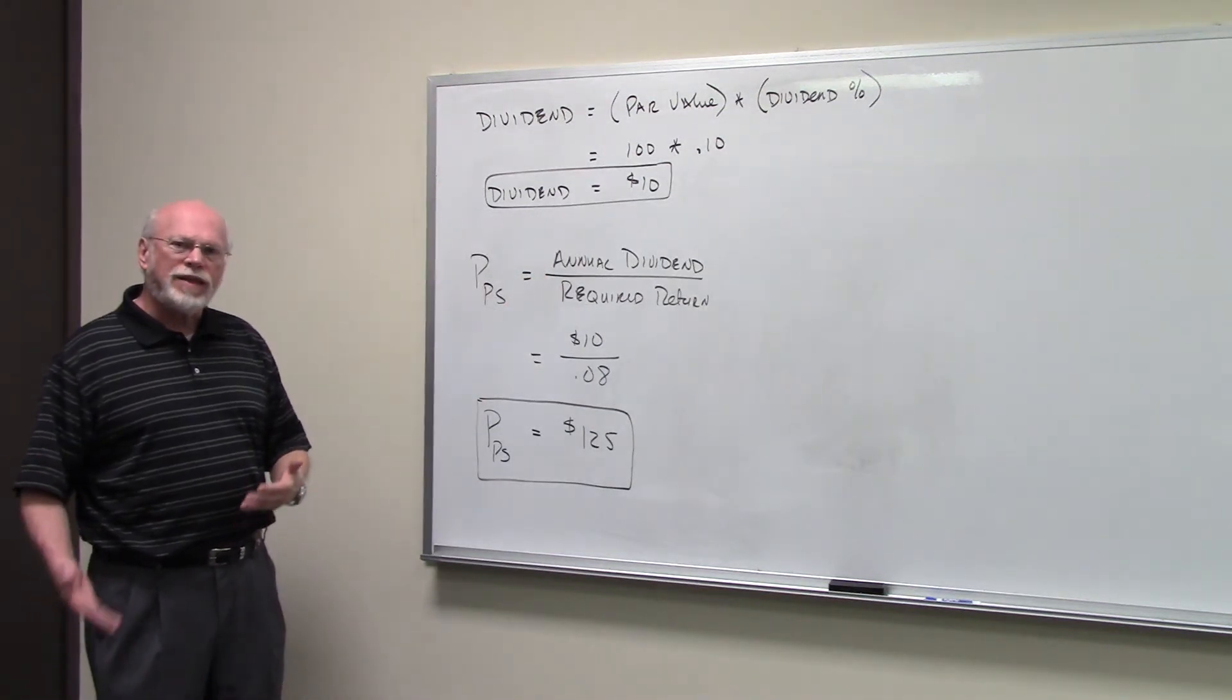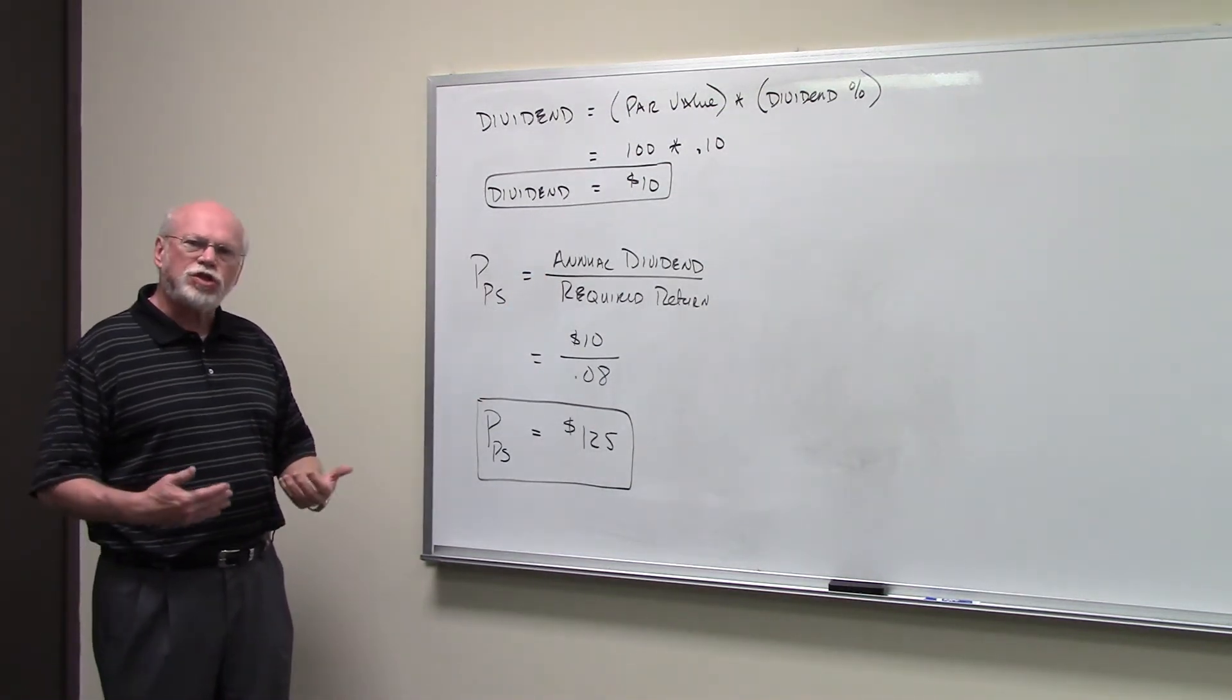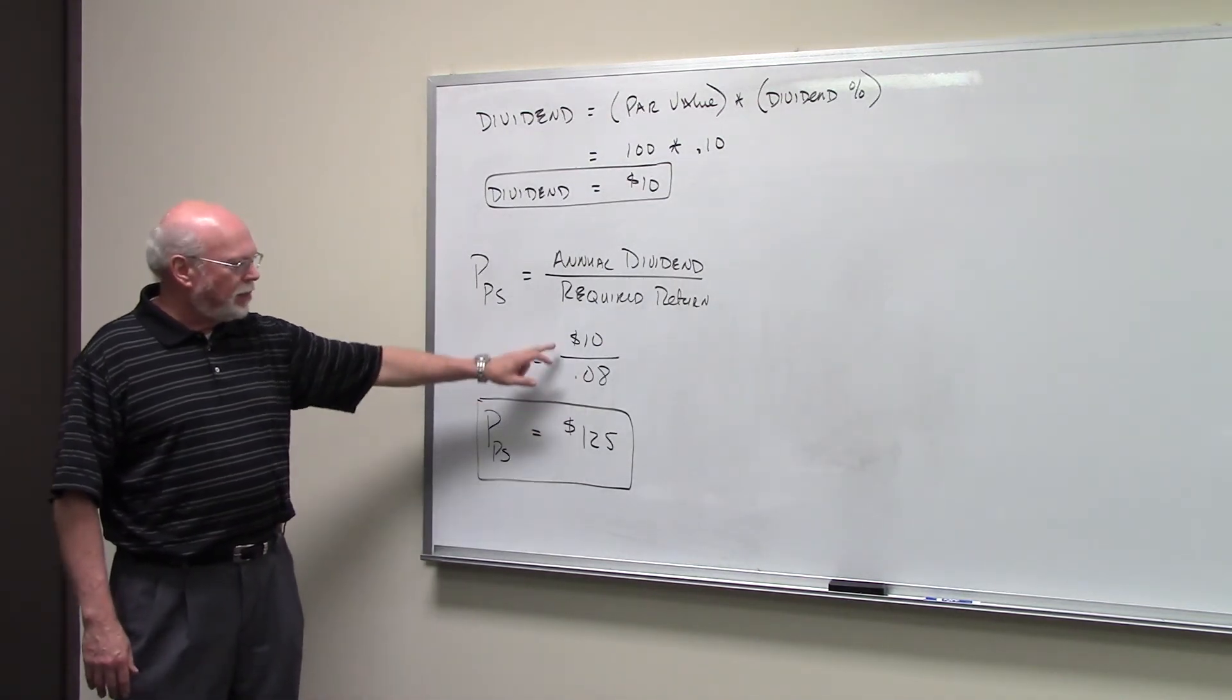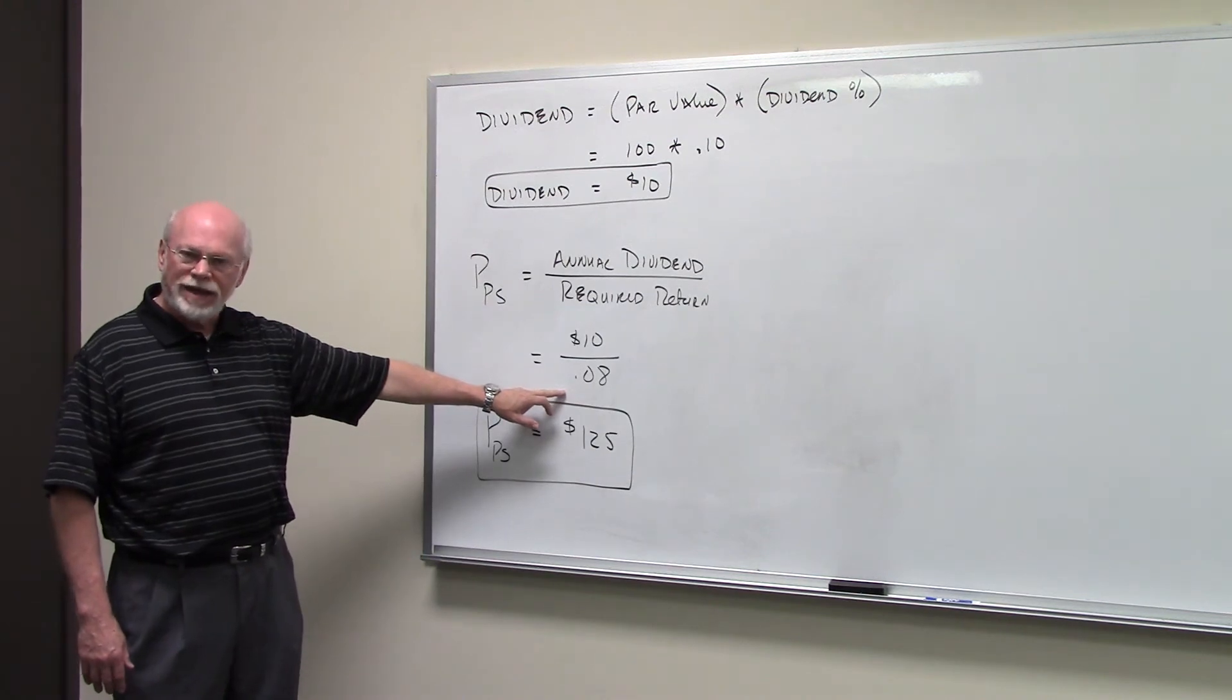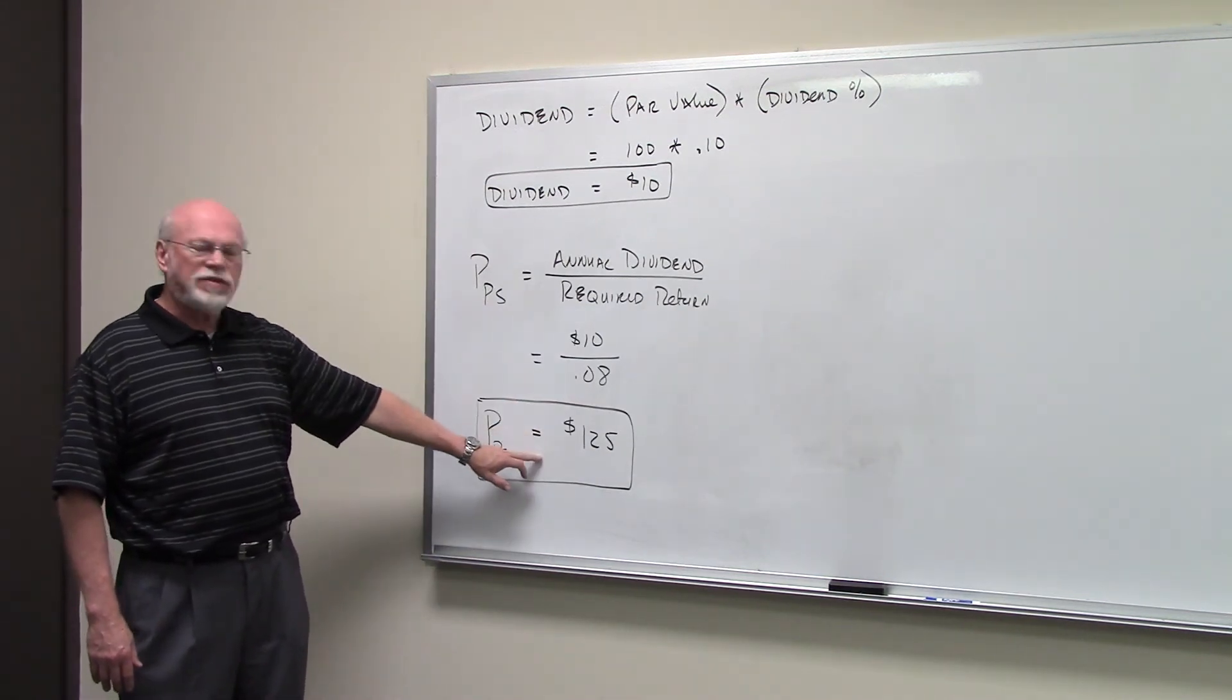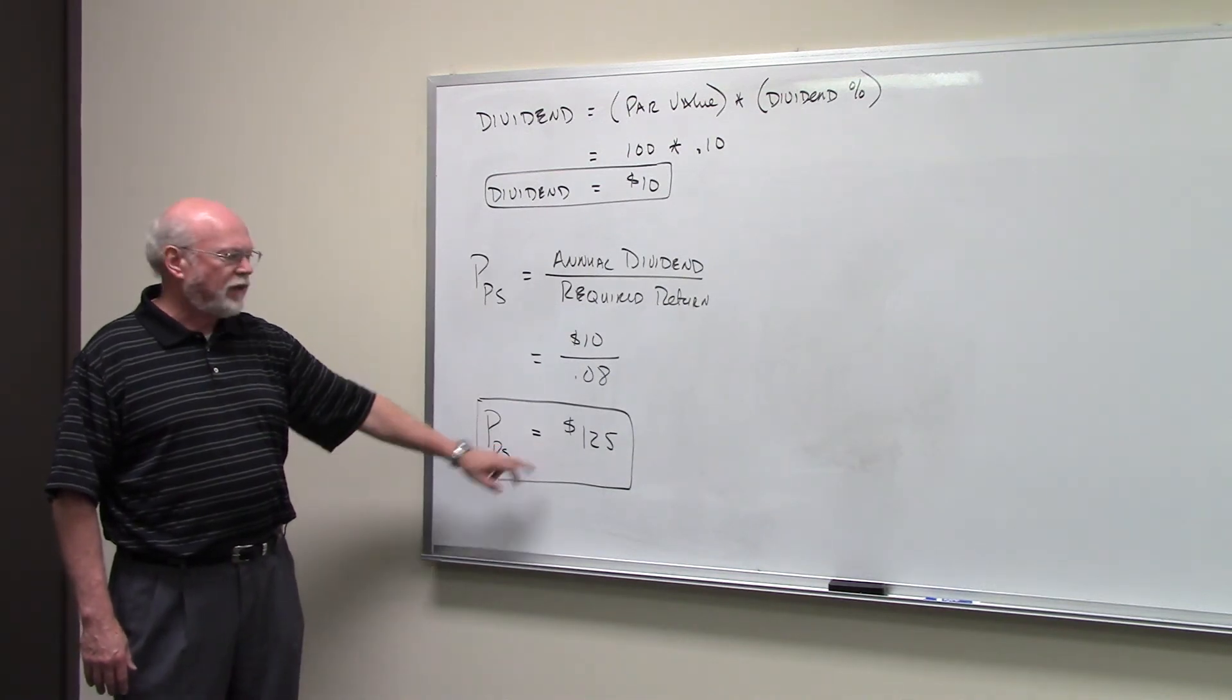And in the problem, they tell us that investors require a return on this stock of 8%. That means $10 divided by 0.08, the decimal form of 8%, that gives us a price on the preferred stock of $125.